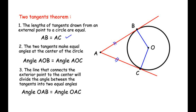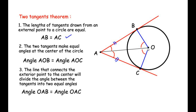The second point says that the two tangents make equal angles at the center of the circle. If we draw a line connecting the external point to the center O, the angle at O gets divided into two equal halves — angle AOB equals angle AOC. The third point states that this line also divides the angle between the tangents into two equal halves, so angle OAB equals angle OAC.